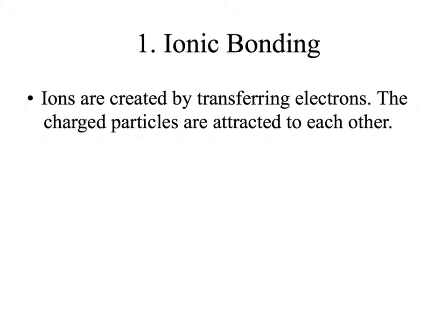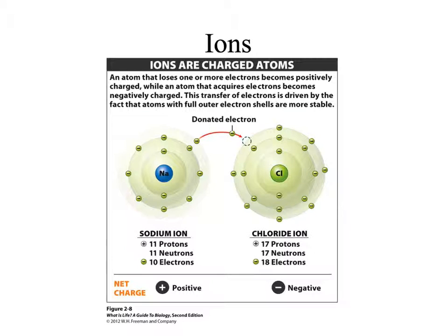Ionic bonding involves creating ions by completely transferring electrons. The charged particles that result are attracted to each other, just like magnets. In this example, sodium has 1 electron in its outer electron shell. It will gladly give away that electron so that it has a full outer shell. Chlorine has 7 electrons in its outer shell, and therefore will gladly accept 1 electron to fill its shell. To create ions, the electron from sodium is completely donated or transferred to the chlorine.